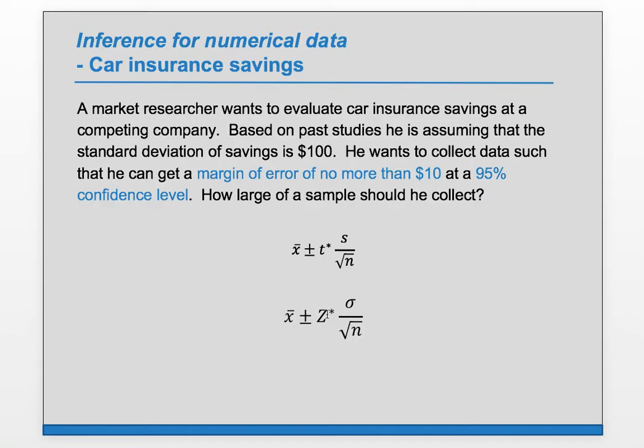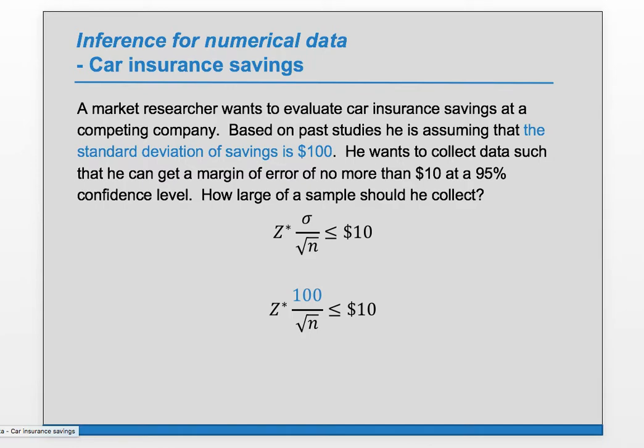So we want this margin of error to be no more than $10. So we set that piece to be less than or equal to $10. We're putting an upper bound on our margin of error. And now we can plug in the standard deviation, which is given to us as $100. We can plug in the z star for the 95% confidence level.